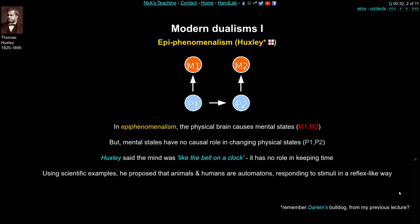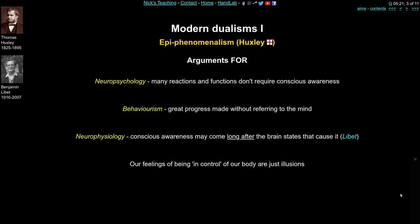Why did Huxley think it, and what's the evidence for epiphenomenalism? Huxley lived through some of the first developments in neuropsychology, and would have been aware of lots of patients who had brain damage and then lost particular functions. For example, if you lose your visual cortex you might behave as if you can see, or respond to a doctor saying you can see when in fact you can't see a thing. These strange neuropsychological cases show that what people say they're aware of doesn't really seem to bear any relationship to how their brain actually is — a good reason to think the mind is an epiphenomenon.